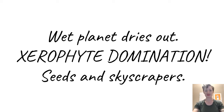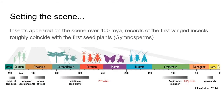So here we go into the gymnosperms. Whenever we consider the evolution of a new group of plants, it's important to consider the world that they're evolving within. Our bryophytes were the first plants to move on to land, most likely, and they would have had this completely open terrestrial surface which would have been high exposure for them — which is tricky — that is stress that they are going to have to adapt to, but they don't have to compete with any other plants.